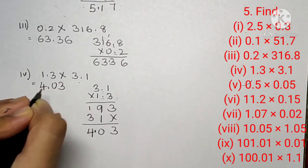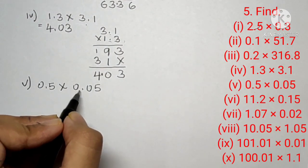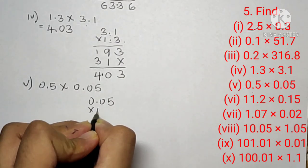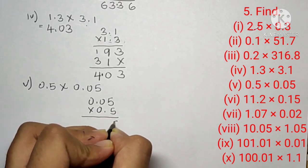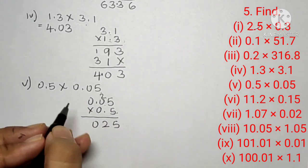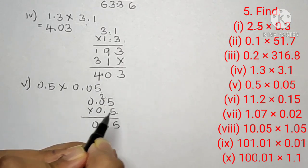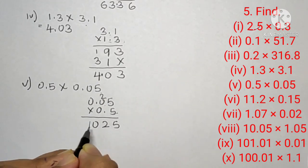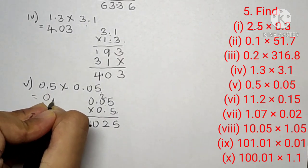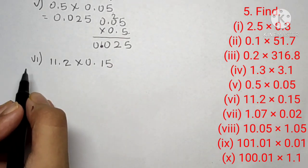The answer is 4.03. Question number five, fifth part is 0.5 into 0.05. Let's multiply: 5 fives are 25, 5 zeros are 0. Now 0.05 has two digits from the last and 0.5 has one digit from the last, giving 1 plus 2 equals 3 digits from the last. Our answer is 0.025.